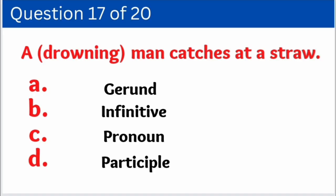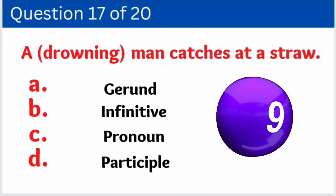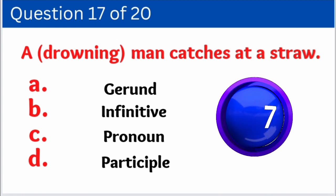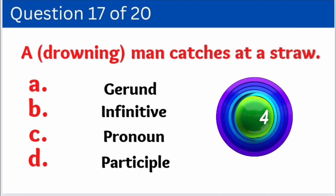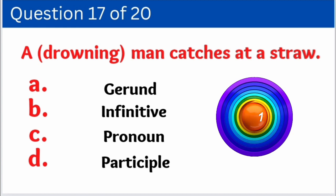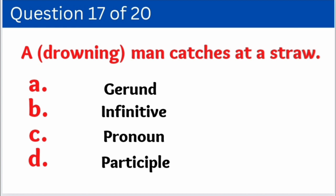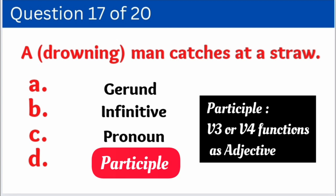Question number seventeen: 'A drowning man catches at a straw.' Here we have to identify how 'drowning' is used. Options are: A. Gerund, B. Infinitive, C. Pronoun, D. Participle. The correct answer is option D — Participle. A verb when it acts as an adjective.